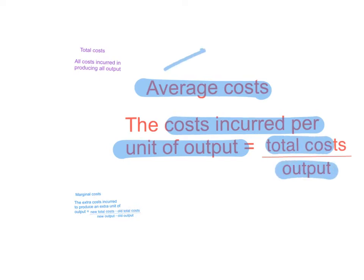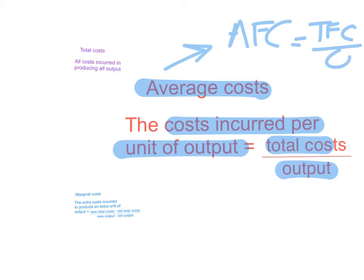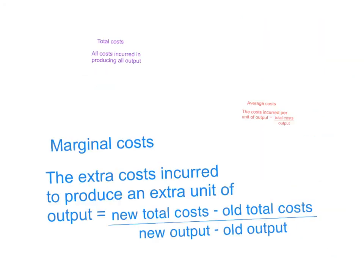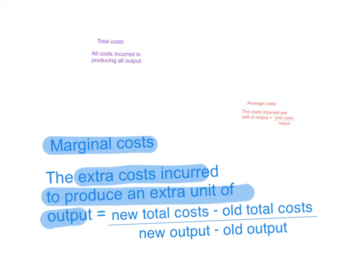There are three types of average costs: average fixed costs, which are total fixed costs divided by output; average variable costs, which are total variable costs divided by output; and average total costs, which are total costs divided by output. Marginal costs are the extra costs incurred to produce an extra unit of output — you take the new total costs minus the old total costs and divide by the change in output. Marginal cost is the cost of that last unit you just produced.